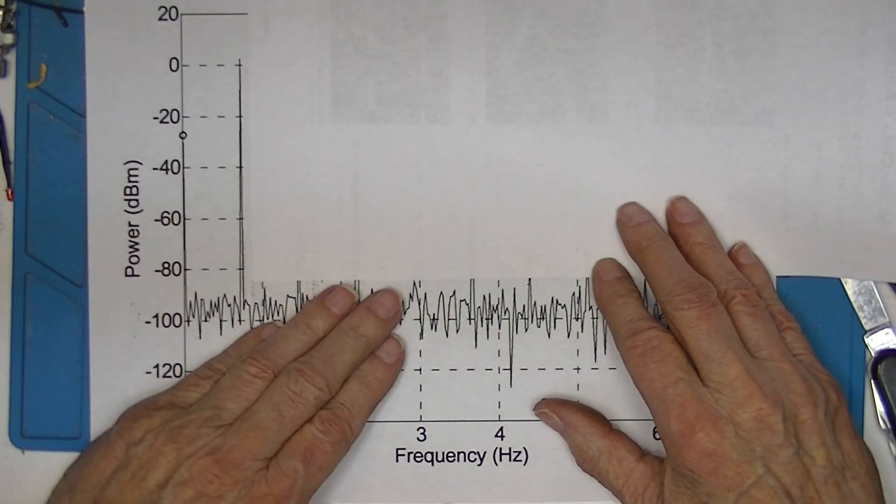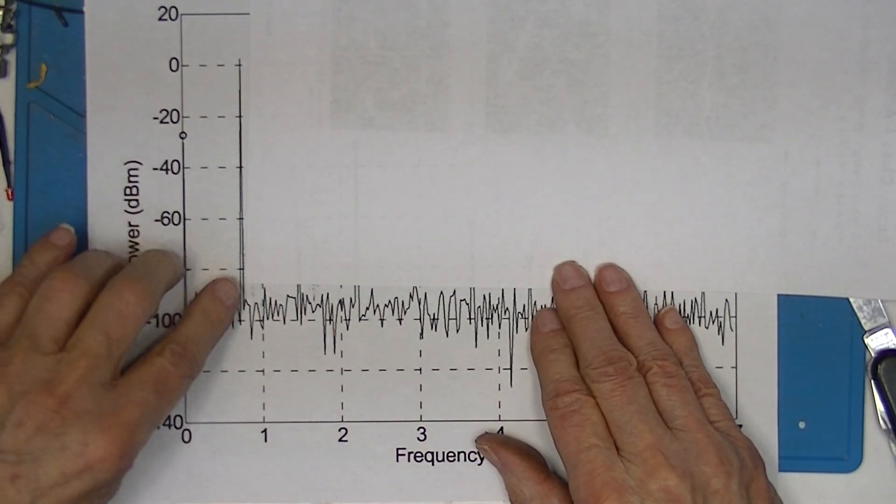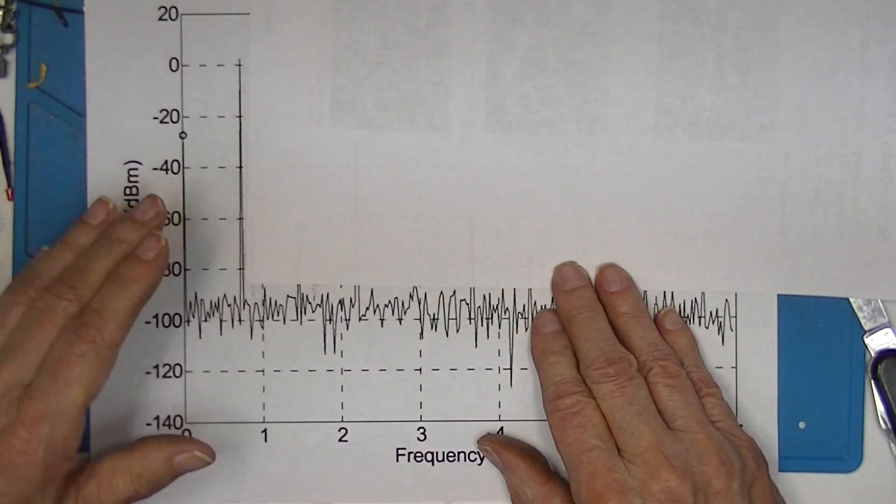If I were to put in this spectrum analyzer a very good sine wave, the spectrum analyzer would not see any harmonics because they would not exist.